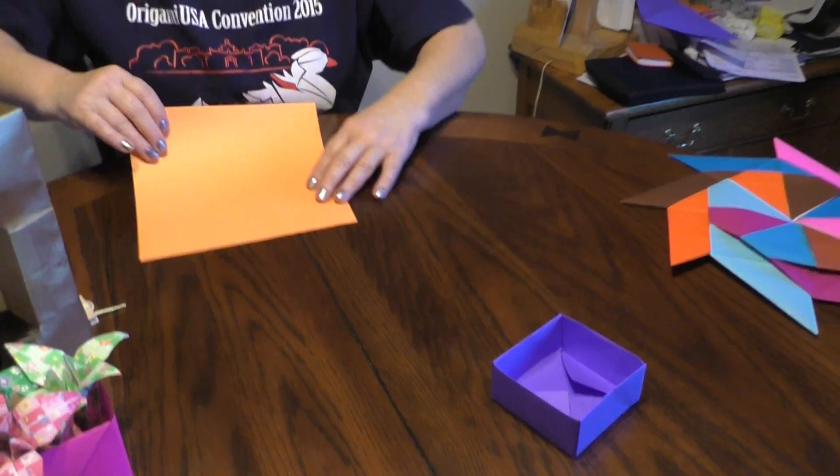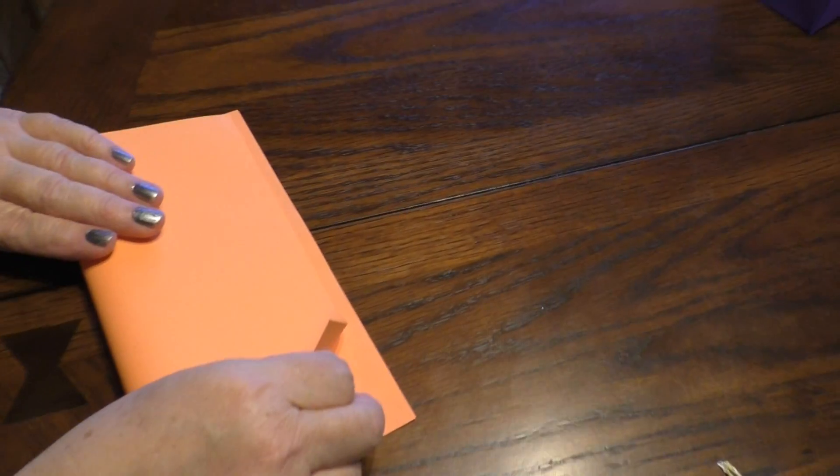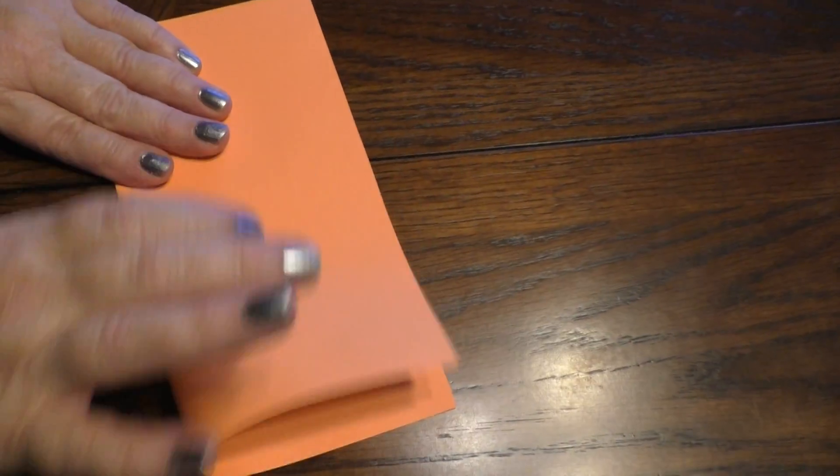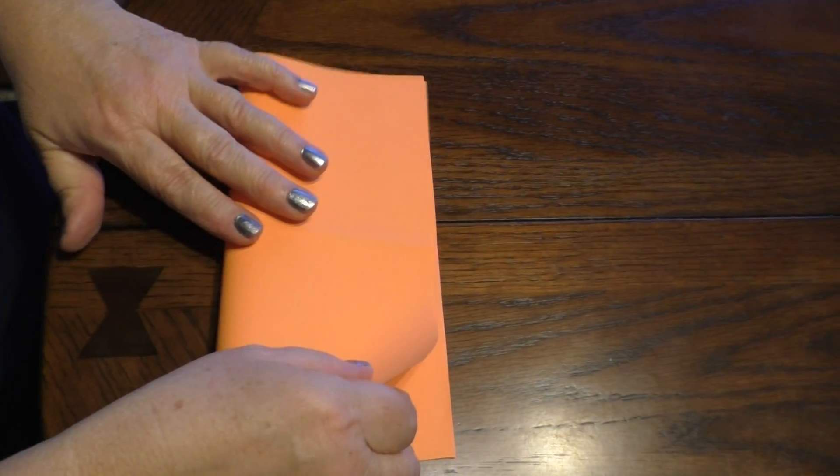First thing you need to do is take a square piece of paper, fold it in half into a rectangle, open it up and fold it again.